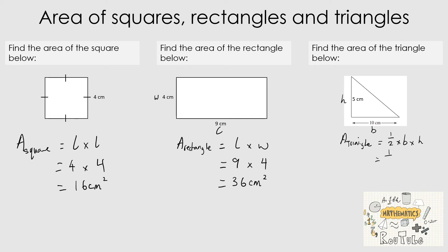We substitute the values in: one half multiplied by B, which is 10, multiplied by H, which is 5. You can do this manually or on a calculator, which gives us 25 centimeters squared. Always start with your formula, then substitute the values in, work to the final answer, and ensure you include your units. For area, it is always squared units.